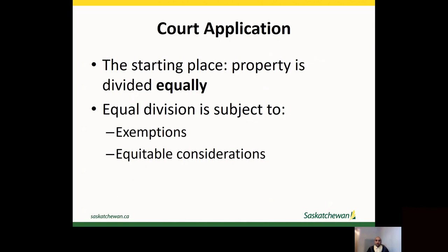Property owned before the parties became spouses may be exempt — i.e., not shared between the spouses. For example, if one spouse had a rental property worth $500,000 before the spousal relationship began and this property is still owned by that spouse and still worth $500,000, it may be exempt. If it is now worth $600,000, the increase of $100,000 may be shared. However, there is no exemption for the family home and household goods, even if one party owned the home before the relationship began. The Act also allows for equitable considerations to be taken into account — for example, a spouse with an addiction who uses all or most of the party's assets to support that addiction, or where spouses were married for a very short time and one spouse owns a home prior to the marriage, so dividing the house equally on separation would be unfair.